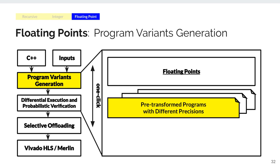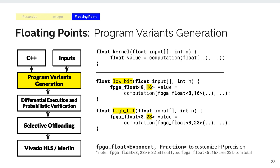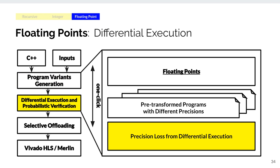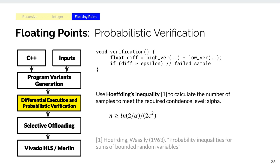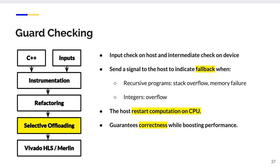We use the ROSE compiler to get two transformed versions: one with reduced precision and another with original precision. After getting these variants, we measure the precision loss using differential execution and add a verification function to check whether the error is within a threshold. Because one sample is not sufficiently reliable, we use Hoeffding's inequality to calculate the minimum number of required samples to achieve our desired confidence level. With reduced bit width and data structure sizes, some inputs may violate the invariant at runtime; to ensure correctness, we add an input check on the host and an immediate check on the device, and if an error occurs, the host restarts computation on CPU.